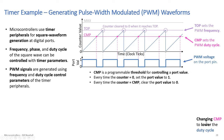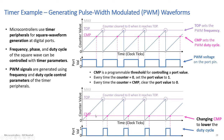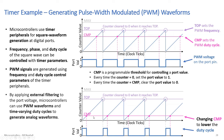To lower the duty cycle, lower the compare value — the counter hits CMP sooner, so the pin stays low longer. You can also apply external low-pass filtering to the PWM output to generate analog waveforms. If the PWM frequency is much higher than the filter bandwidth, you can even generate time-varying analog waveforms by varying the duty cycle.